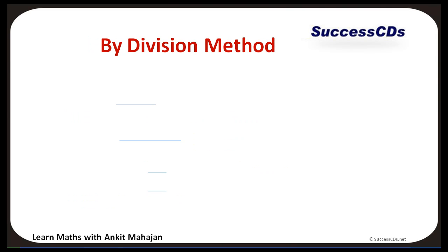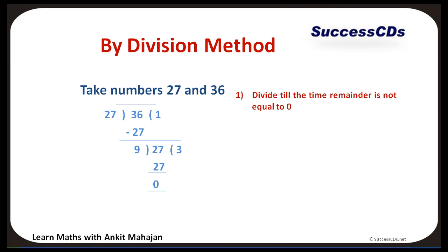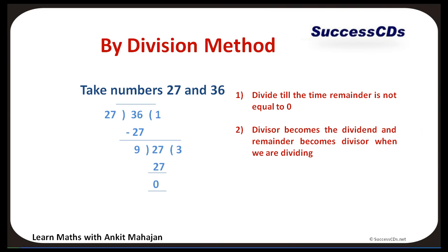Next we move to the Division Method. Take numbers 27 and 36. We divide 36 by 27 and get remainder 9. Since the remainder is not 0, the divisor 27 now becomes the dividend. We divide it by remainder 9 and get remainder 0. Remember: divide continuously until remainder equals 0, and the divisor becomes the dividend while remainder becomes the new divisor.